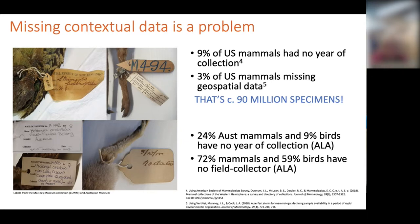Numerous publications have noted the difficulty of missing data. In the US, one study found that 9% of mammal specimens across the American continents had no year of collection, and Mullaney and Cook found that 3% of mammal specimens in US collections were missing their location data. Extrapolating that into a global context means about 90 million specimens must be excluded from research due to missing location data alone.